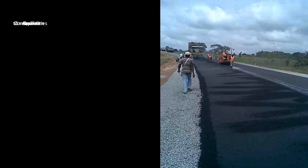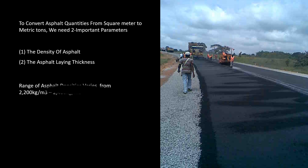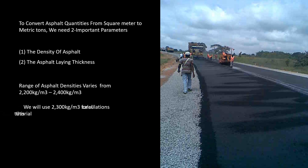To convert asphalt quantities from square meters to metric tons, we need two important parameters: the density of asphalt and the asphalt lane thickness.